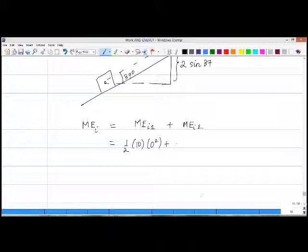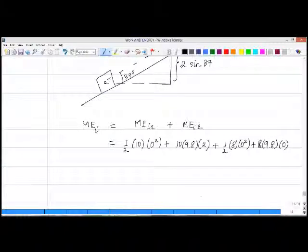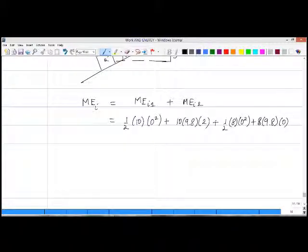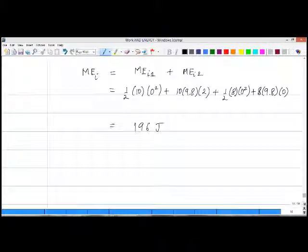For the second block, the initial kinetic is zero—one half times 8 times zero squared—and its potential is also zero because it is at its lowest point. That's the one thing we need to make sure we understand. If you calculate this, it ends up being 196 joules of total mechanical energy in the beginning.